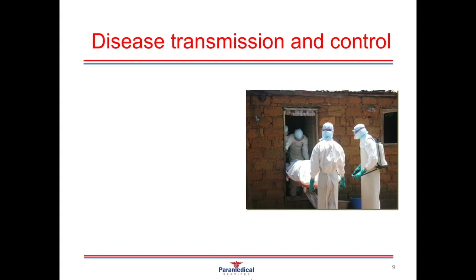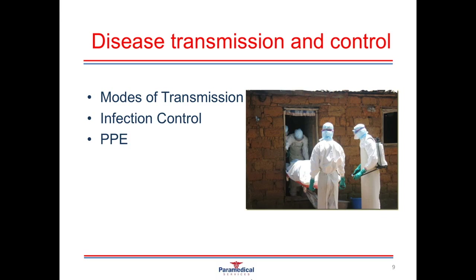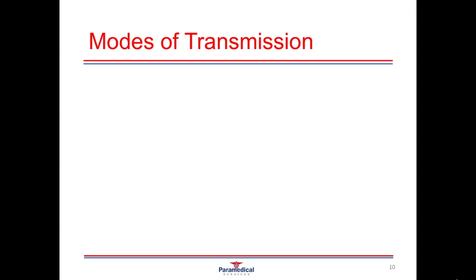In this next section we'll be having a look at disease transmission and control. First we'll discuss the different modes of transmission and the chain of infection, and then we'll look at different infection control methods, the importance of personal protective equipment, how to dispose of contaminated waste products, and managing needle stick injuries. In order for a disease or pathogen to be spread from one person to another, it needs to have a mode of transmission.